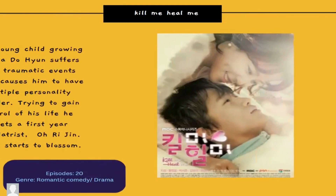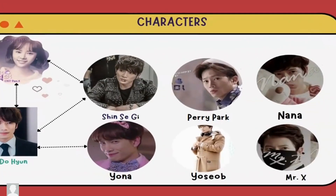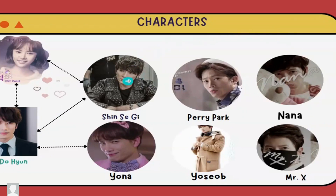Next we have Kill Me Heal Me. As a young child, the lead character suffers from traumatic events which cause him to develop multiple personality disorder. Trying to gain control of his life, he meets a first-year psychiatrist named Origin, and love starts to blossom. We have Origin as the first-year psychiatrist at the hospital, and Cha Jin Hyun as the main host of all the different personalities — he has seven personalities in total.